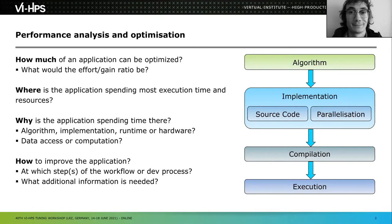Once you figure out where the application spends most of its execution time, the next question is: why? That requires more digging. The basic questions are: should we look at the algorithm, the implementation, is the programming language not suitable, is the parallelization paradigm not suitable, is it the runtime, or maybe the hardware? There might even be bugs in the hardware or firmware updates that retrograde certain parameters, so everything should be investigated.